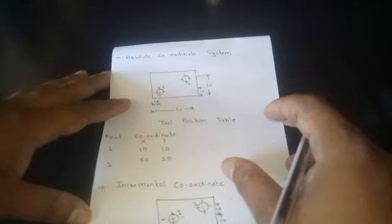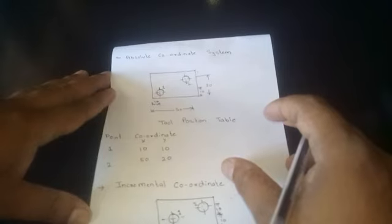First we will see what is the absolute coordinate system or absolute dimensioning method. You can see a top view of a plane has two holes, hole number one and hole number two of certain diameters.